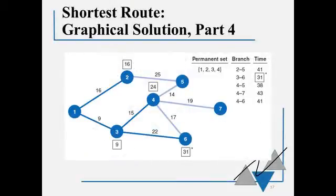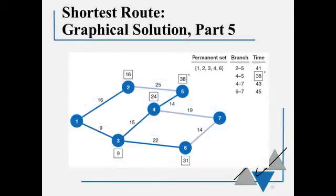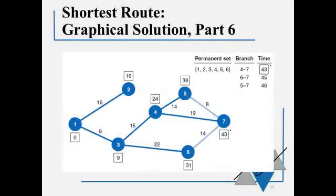Now we have 1, 2, 3, and 4 in our permanent set. We're looking to add nodes 5, 6, or 7. Now the shortest route would be to add node 6. 9 plus 22 is 31, and that's our next point to add. So we're going to add 6 to the permanent set. So now our permanent set is 1, 2, 3, 4, 6, and the next point in would be node 5. We add that to our permanent set, and then the last point in is node 7, and the shortest path to get to node 7 is from 4 to 7. So we were at 24 at 4. We're going to add 24 plus 19. That gets us to 43 to get to node 7.